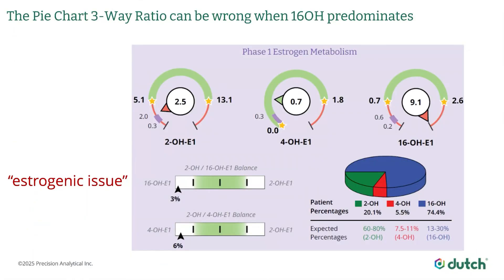Let me show you a really good example of when we can miss something really important if we're using the pie chart. This patient has levels of two hydroxy, four hydroxy, and 16 hydroxy that are all above the postmenopausal range. So there is substantive estrogen in this patient for each of these metabolites. Now, as we look at the pie chart, it tells us one story very accurately: the 16 hydroxy is predominating over the other metabolites. That is an estrogenic issue. You can see on the slider that it's at the third percentile, meaning the two-to-16 ratio is only higher than 3% of the population — that's an extreme preference towards the more estrogenic 16 hydroxy E1. But when you look at the percentage of the four hydroxy, it's a little sliver of pie on this pie chart.